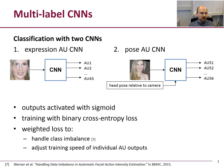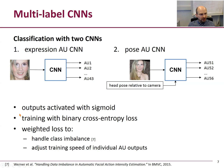For classification we use two multi-label CNNs: one for the expression action units and one for the pose action units. For the pose CNN, we also use the head pose relative to camera, fed in as three angles — yaw, pitch, and roll — as provided by OpenFace. The outputs of the CNN are activated with the sigmoid function, and training is done with binary cross-entropy loss. The loss is weighted to handle class imbalance and to adjust the training speed of individual action units.